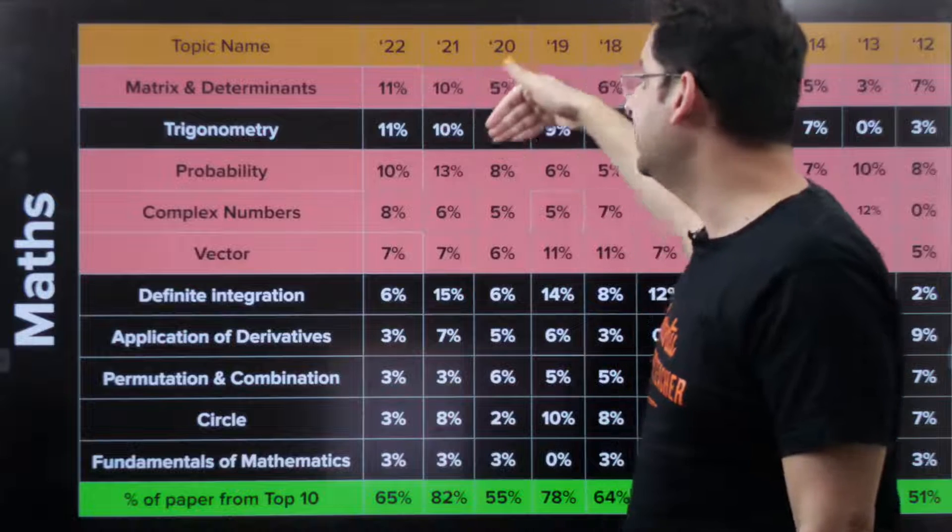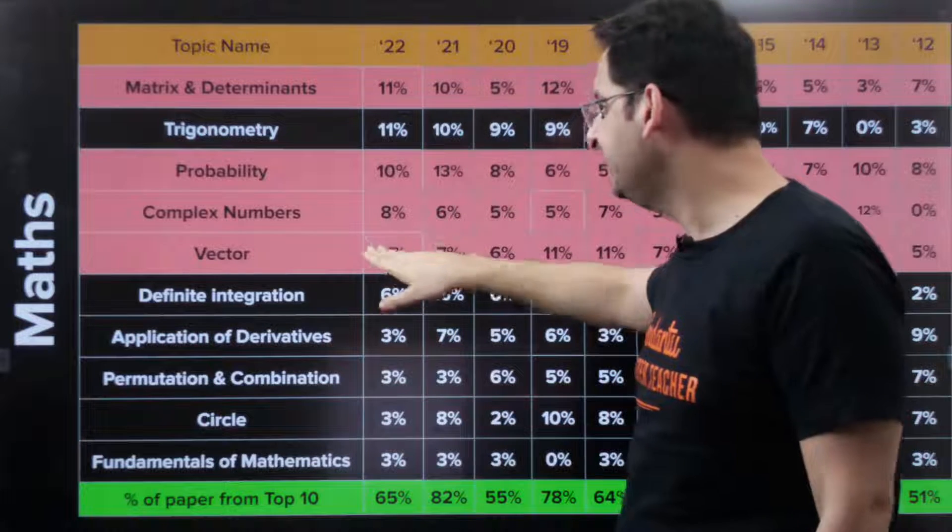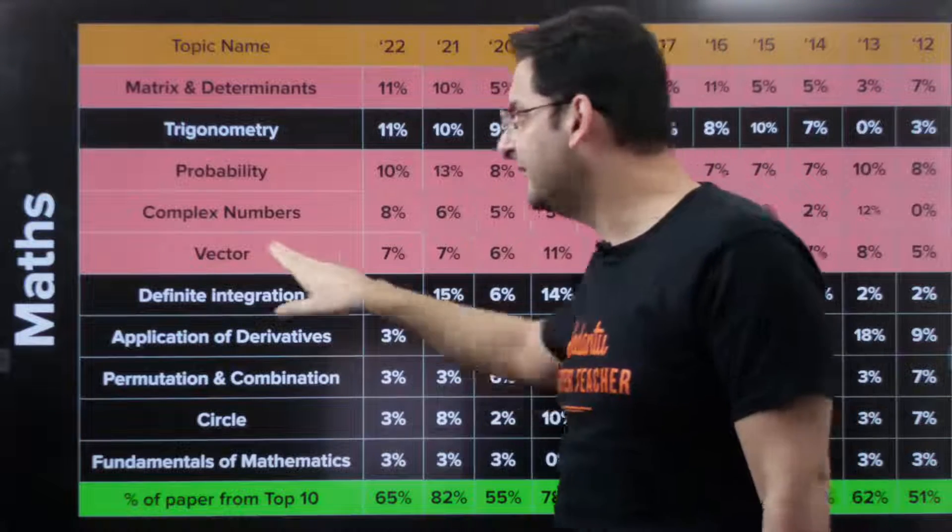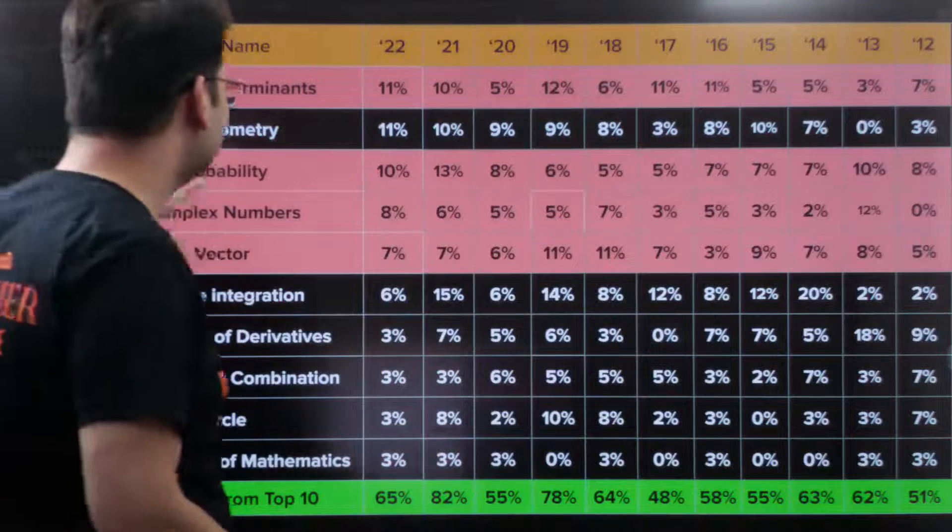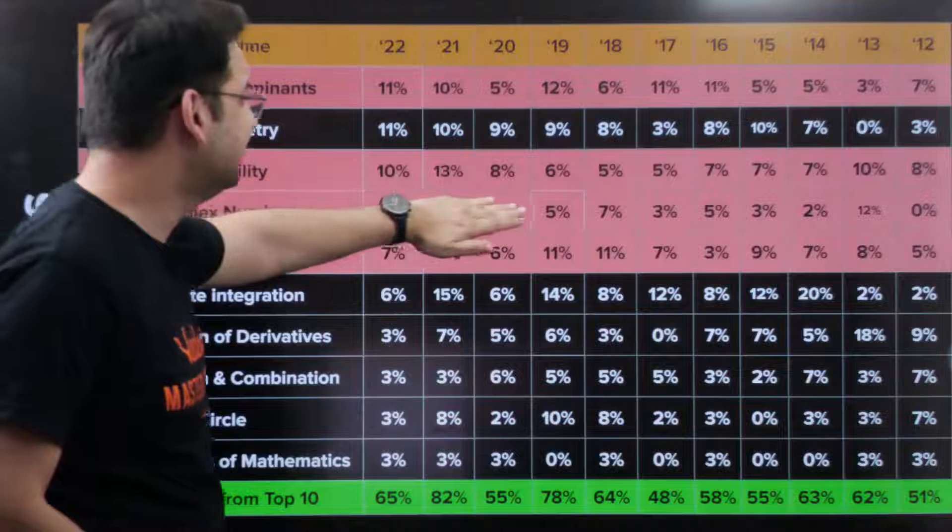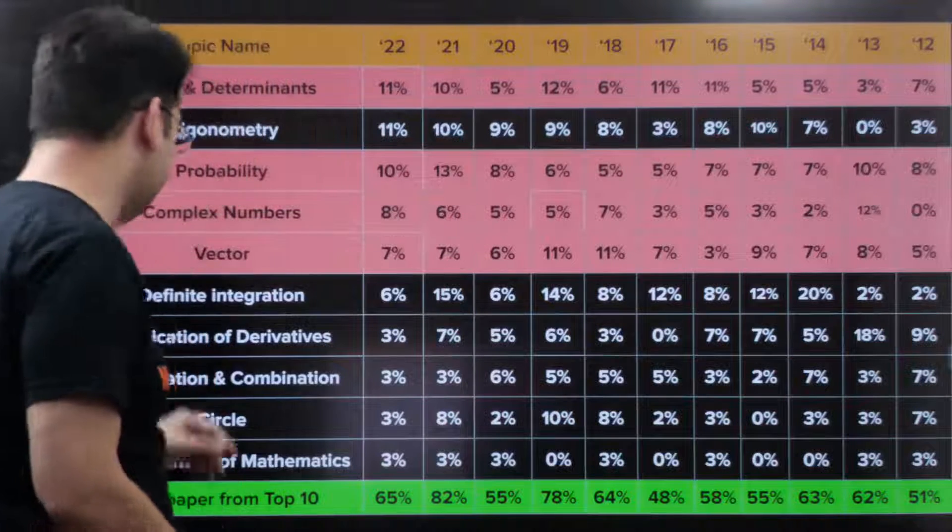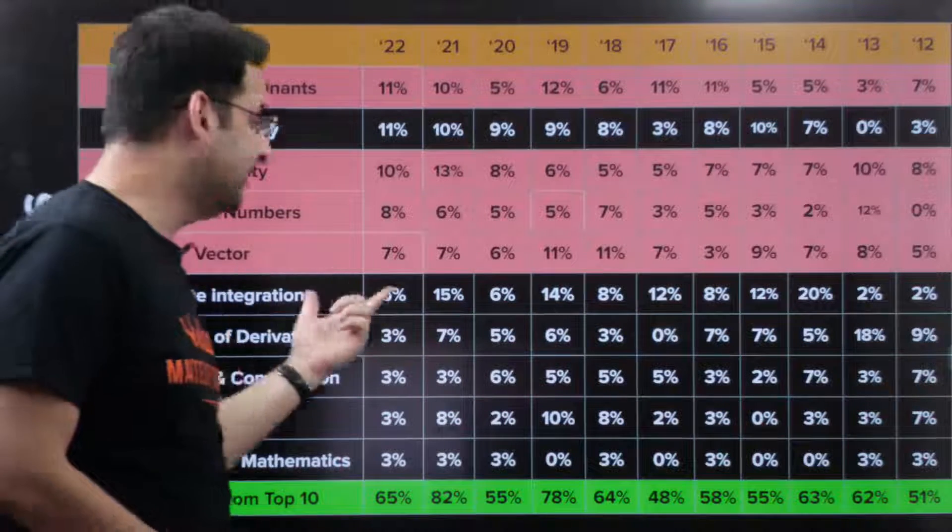Followed by vectors in 3D also. Vectors, 3D, probability, these are the three topics which are generally done in the last. But these are very high weightage. That is the reason a lot of students are not able to do these topics in the proper way. Probability was 10 percent, 13 percent, 8 percent. Vectors in 3D is combined, 7 percent, 7 percent, 6 percent. Complex numbers, 8 percent, 6 percent, 5 percent last three years.